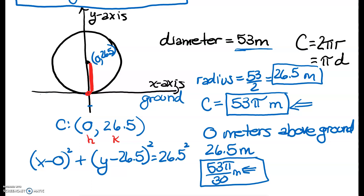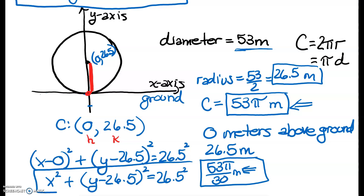I'll simplify this since x − 0 is just x, giving x² + (y − 26.5)² = 26.5². And now I have the equation of my circle — my ferris wheel or my sarsen circle. Remember: when calculating average stone spacing, take the total circumference and divide by the number of stones. If your ferris wheel has people entering at ground level, the circle is 0 meters above ground. Pay attention to those wordings while doing your problems. This example is good for problems 43 and 44.